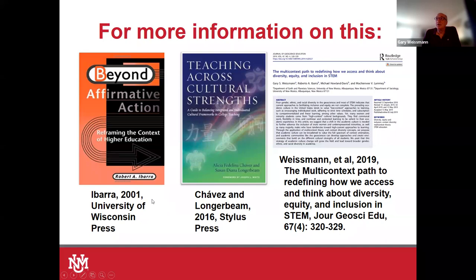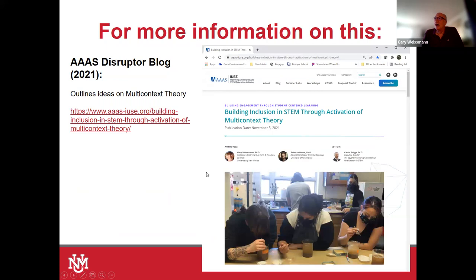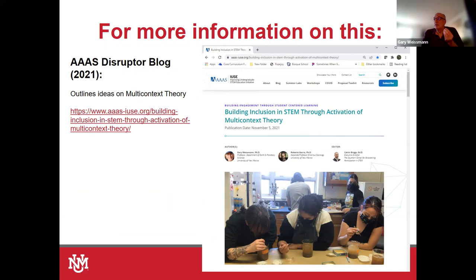If you want more information, Roberto Ibarra has the book Beyond Affirmative Action, which outlines multi-context theory — chapter three is the most important. If you're interested in activating this in your classroom, Alicia Chavez and Susan Longerbeam — Alicia is retired out of UNM and Susan is at Northern Arizona University — put out a book on individuated versus integrated approaches, which is the same as low and high context, and talks about how to bring this into your classroom — chapter one is excellent. My colleagues and I have a paper in the Journal of Geoscience Education describing this multi-context path. There's also a disruptor blog in AAAS that describes multi-context theory. The website includes a low context versus high context cultures matrix — a document that outlines more details about that spectrum, and then describes more of the multi-context theory further on. I think it's a good concise resource. Thank you for spending your late afternoon with me — I acknowledge my colleagues and their contributions, and acknowledge the National Science Foundation and the grant we received to do a lot of this research work. I'm happy to answer questions now.